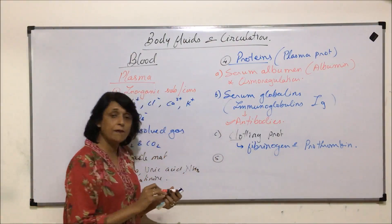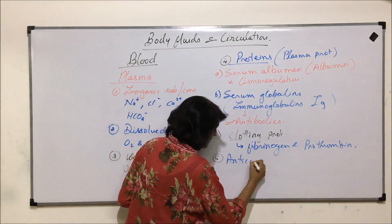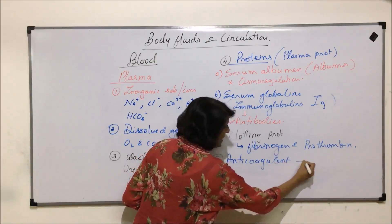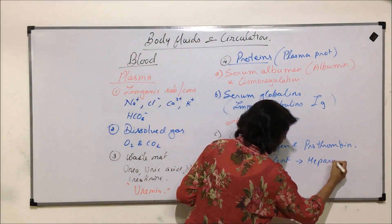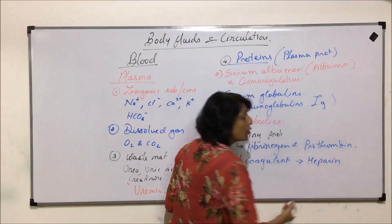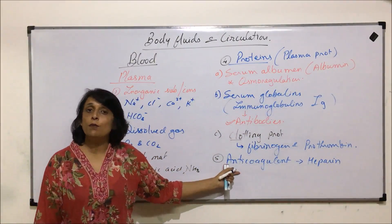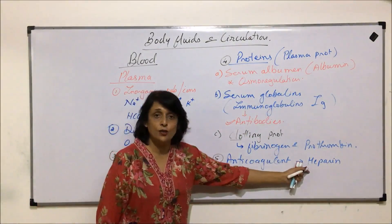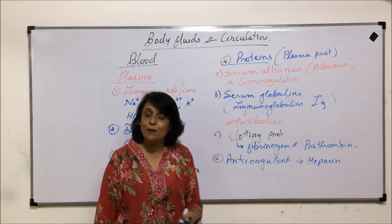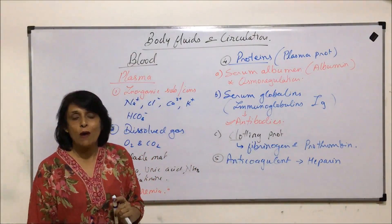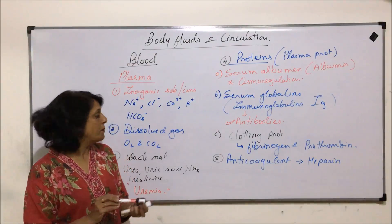The next thing present in plasma is an anticoagulant, and this anticoagulant present in our body is heparin. Heparin prevents the blood from clotting while it is circulating in the body, but whenever a blood vessel gets ruptured, its action is reduced or suppressed, and the clotting proteins help in blood coagulation. This is our defense mechanism to prevent blood loss.